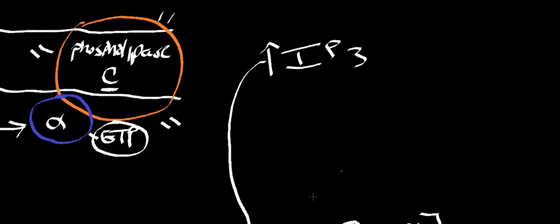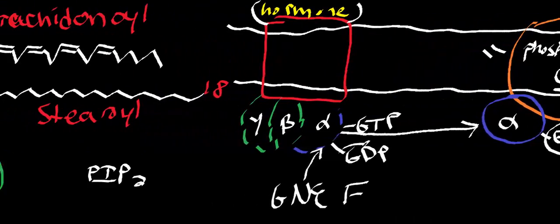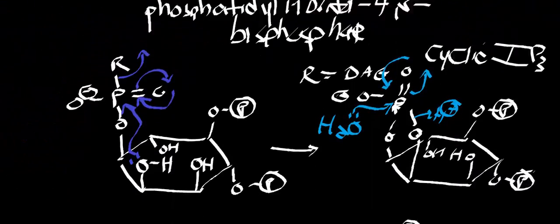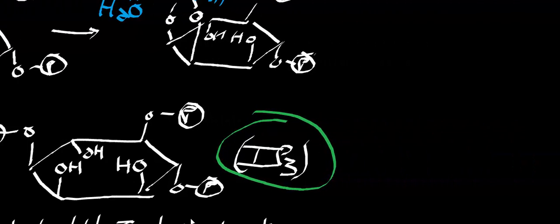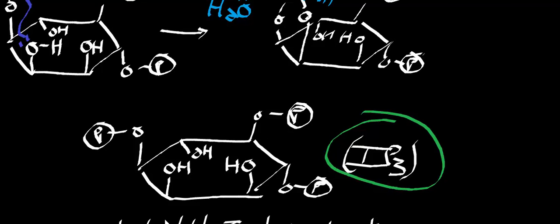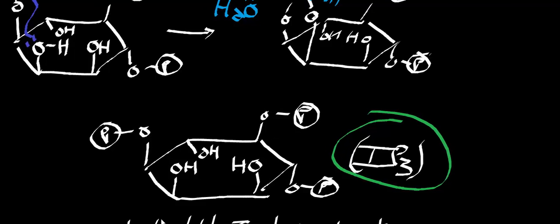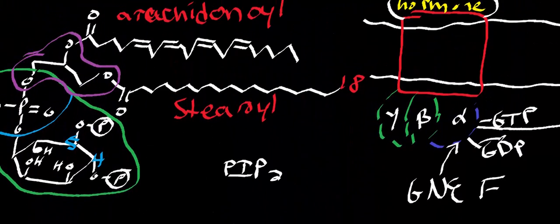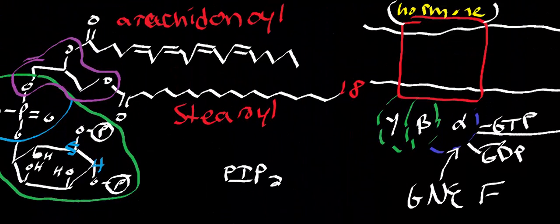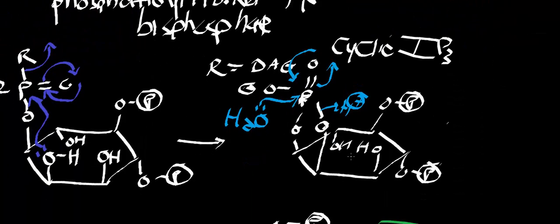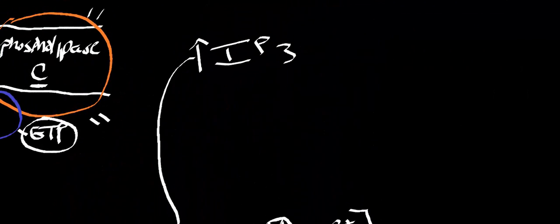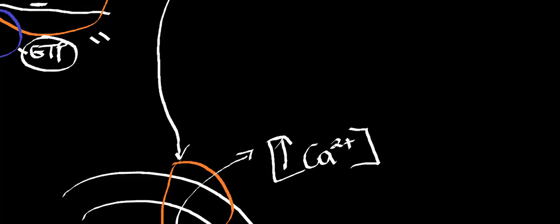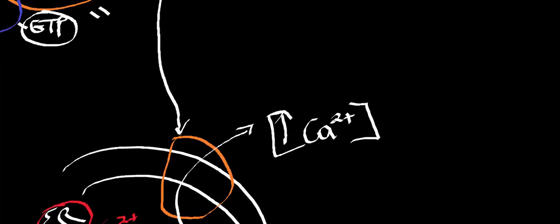That calcium acts as a second messenger and will activate calcium-binding proteins like calmodulin and calcineurin. In general, that is pretty much all you need to know about IP3: its main function is to bind ionotropic receptors on the ER and cause intracellular calcium concentrations to rise. Inositols in humans are not catabolized; this signaling role is essentially the primary function of inositol.